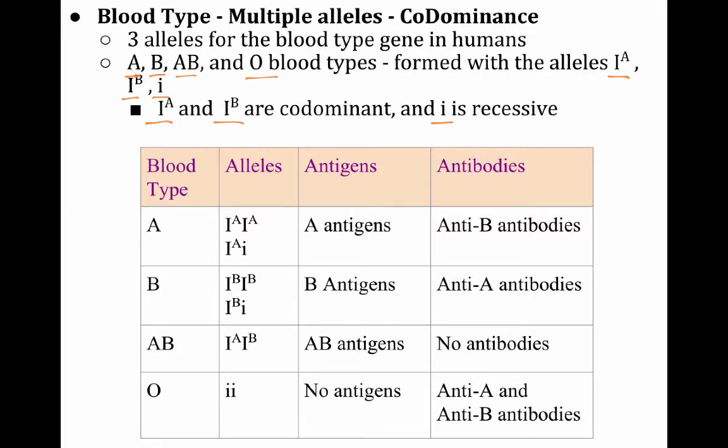So there's a couple different combinations you can have here. If you are type A blood, your genotype is either I^A I^A or I^A i. If you're type B blood, your genotype is either I^B I^B or I^B i.